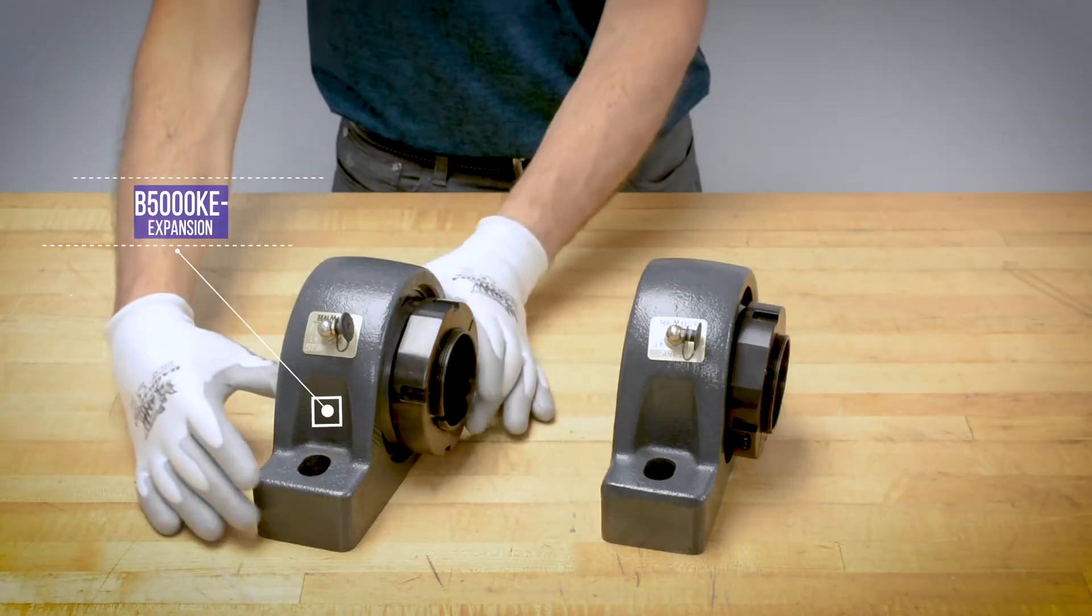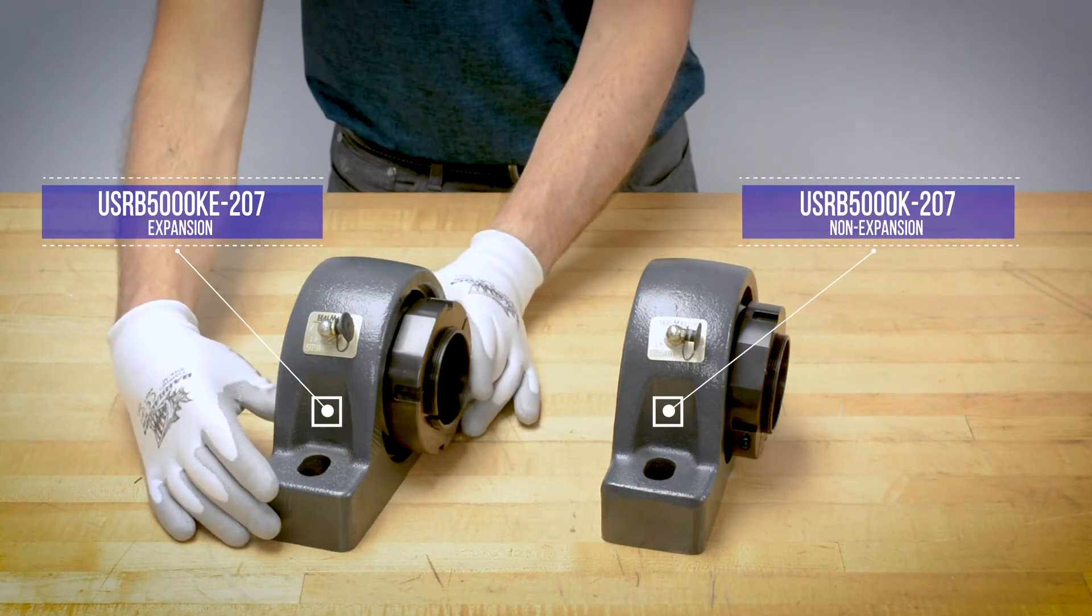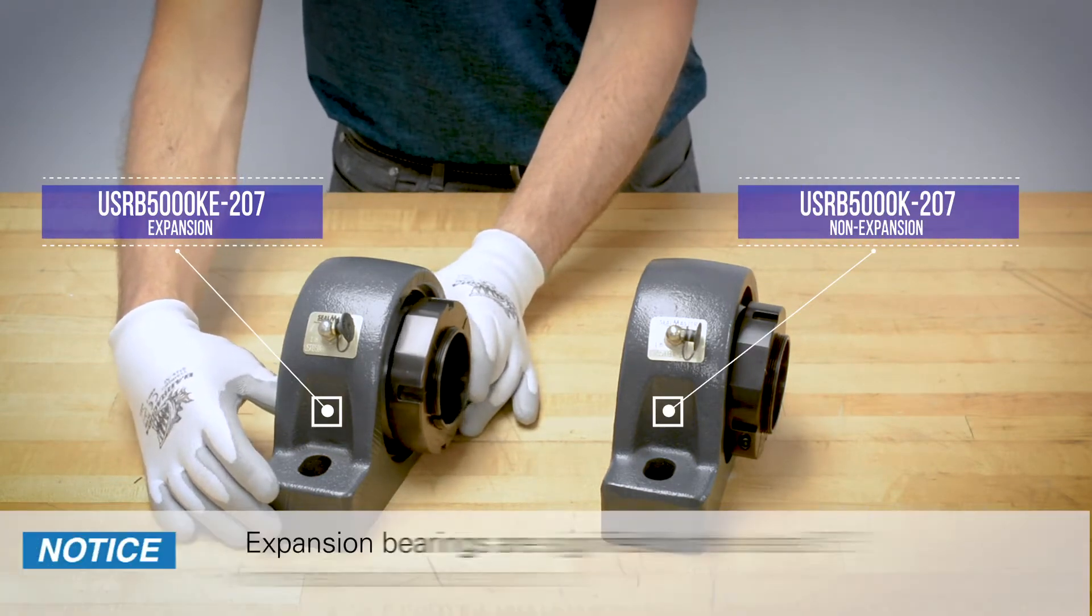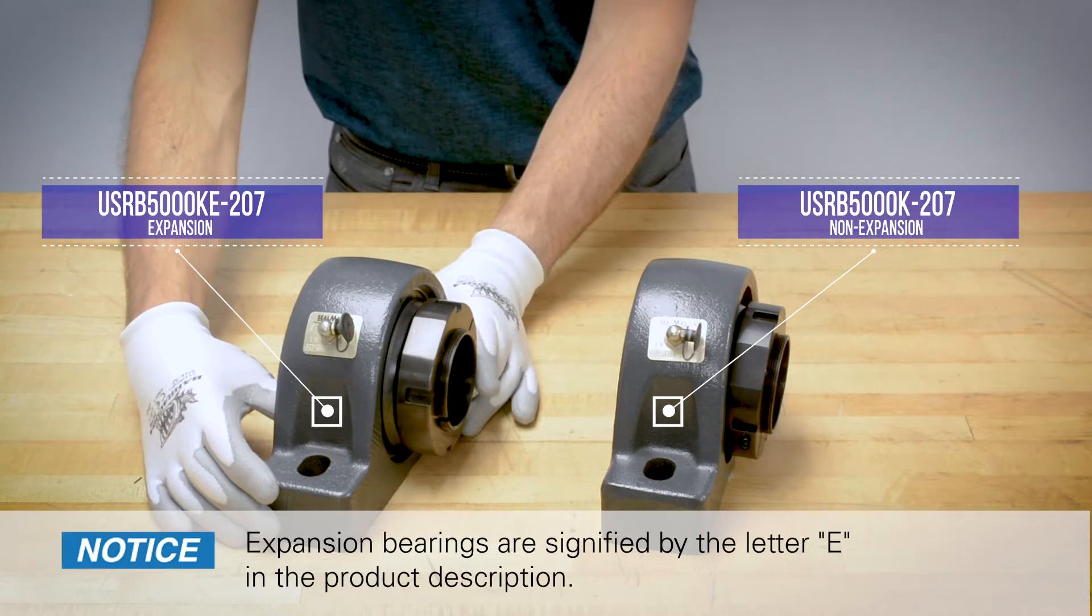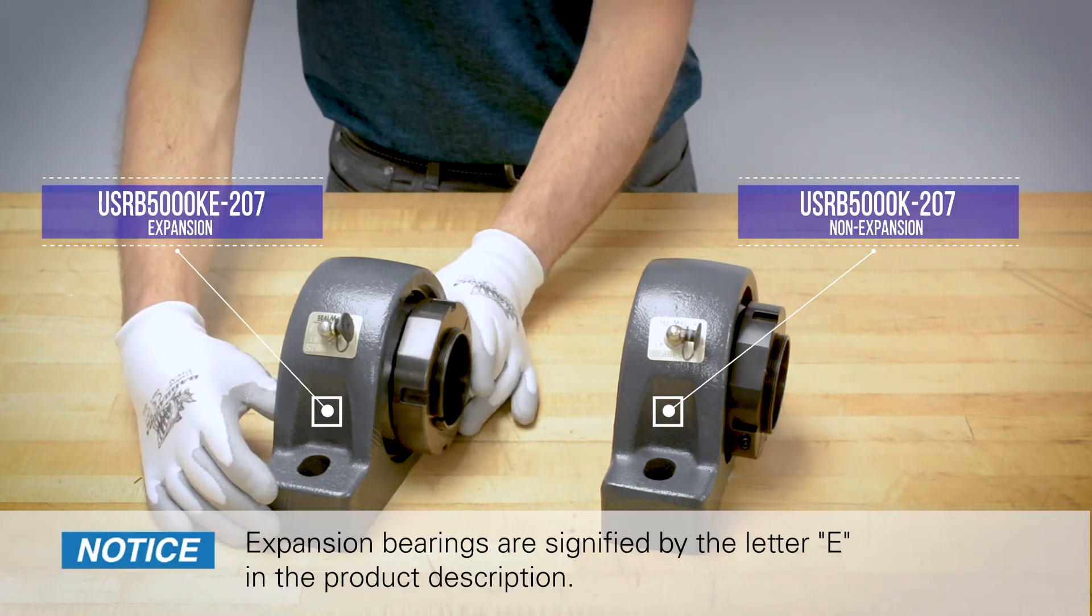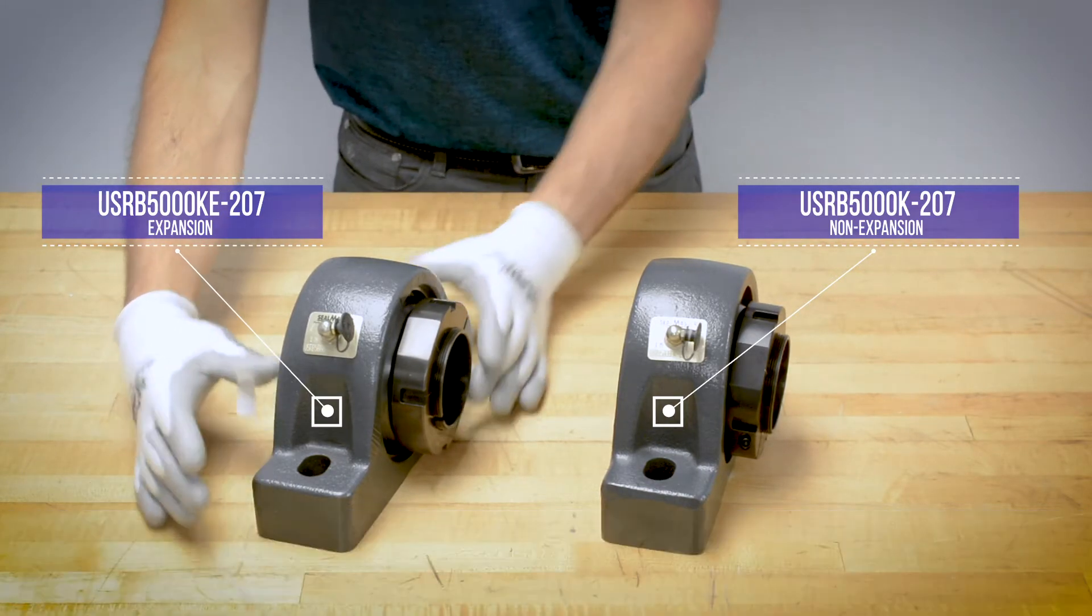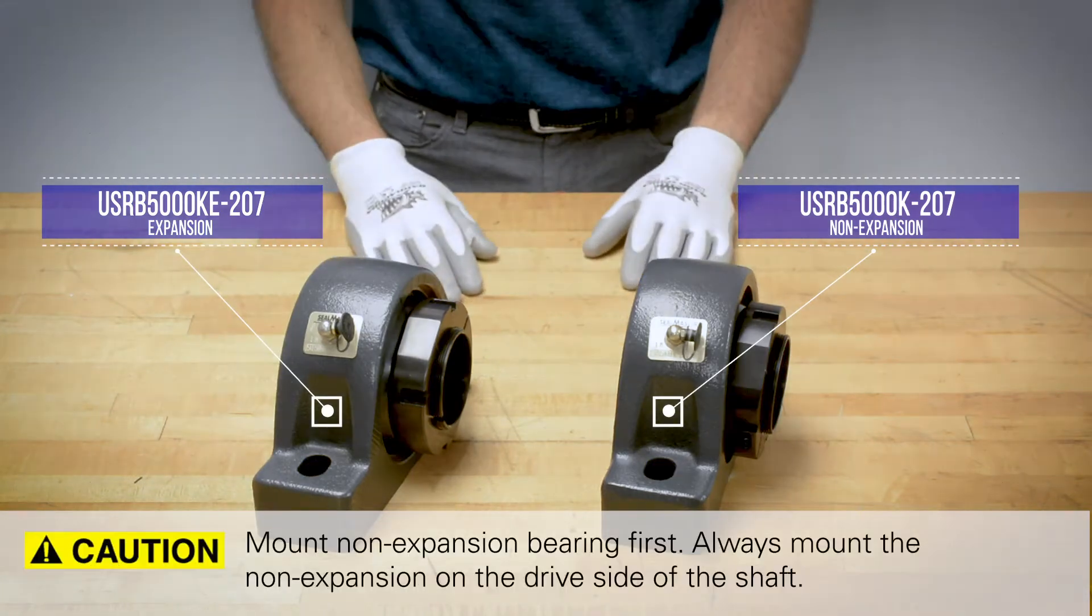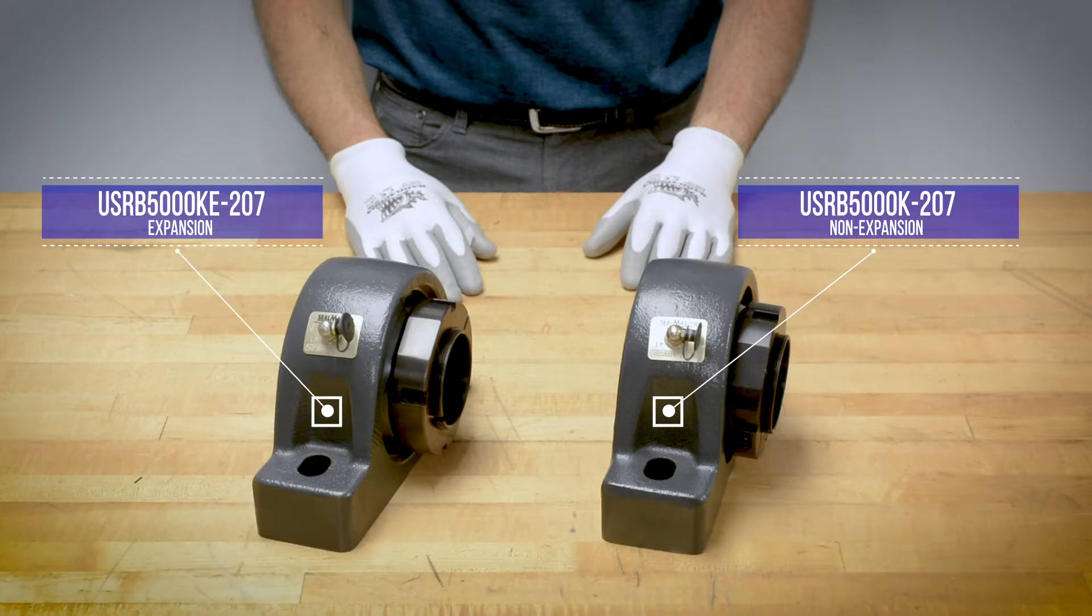SealMaster USRB bearings come in expansion and non-expansion versions to accommodate shaft axial movement from thermal expansion or during adapter lock installation. It is recommended to use one non-expansion and one expansion bearing when installing USRB bearings with clamp lock adapter lock.